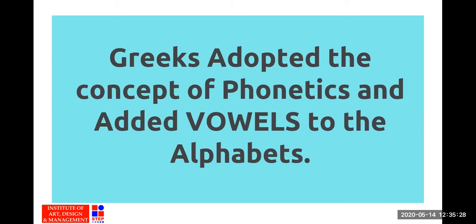Greek phonetics determined the way a word should be spoken. If we talk about 'camel' it is C-A-M-E-L, but before the invention of vowels it was just the consonant sounds C-M-L. Greeks were the first thinkers who identified the sounds of vowels and introduced them to the alphabet.